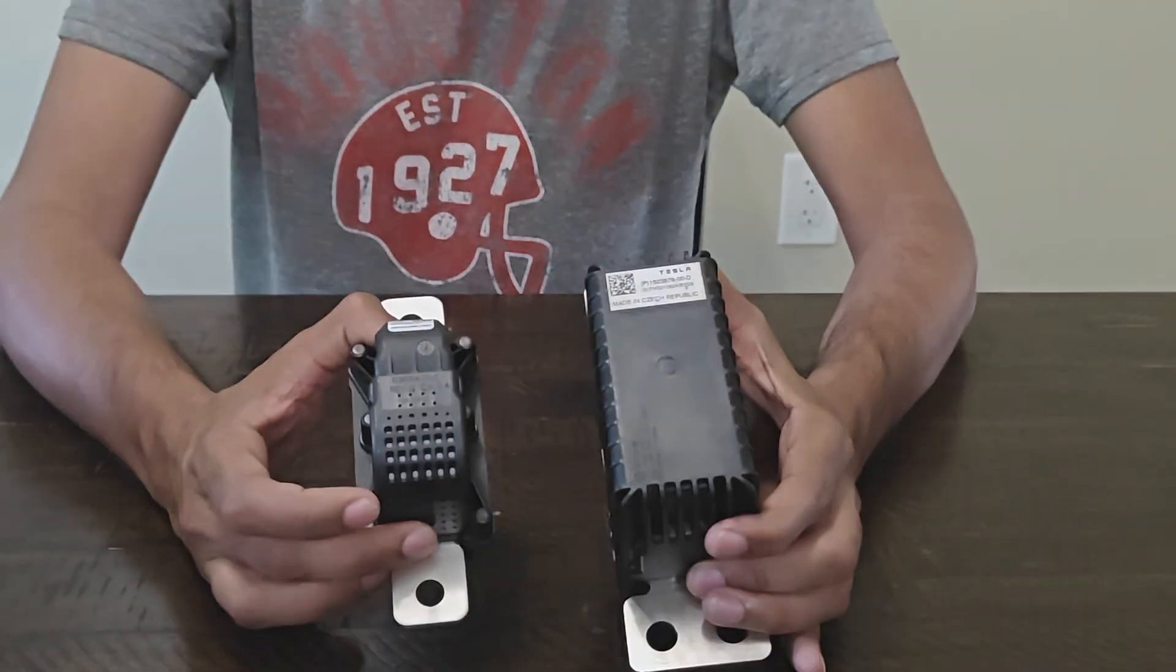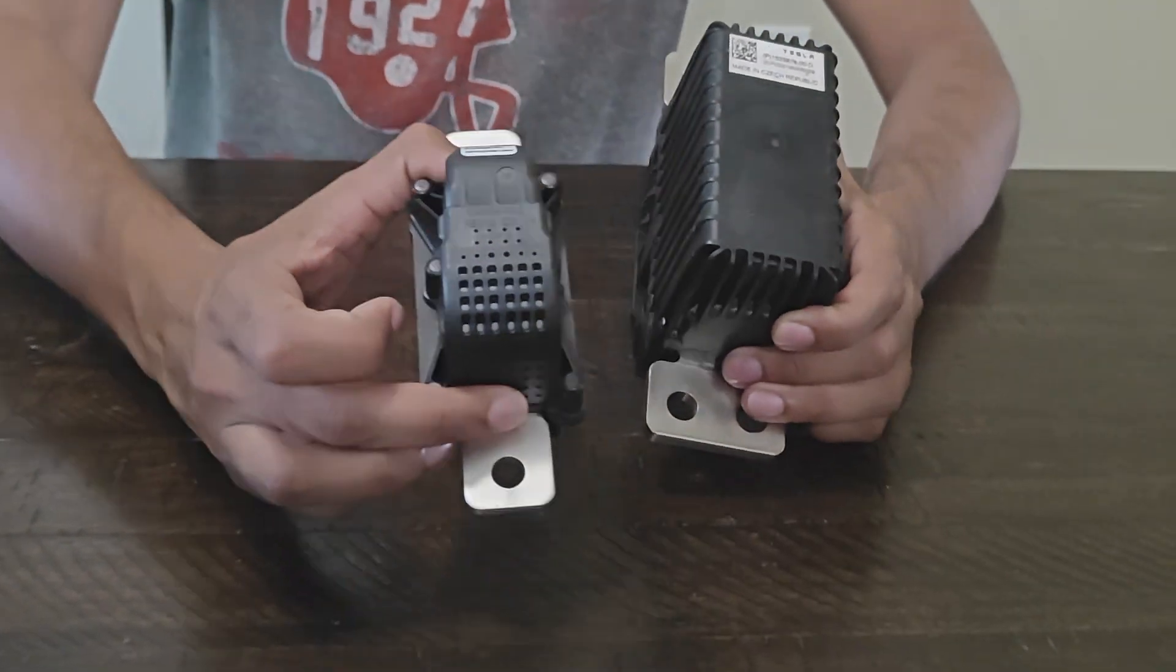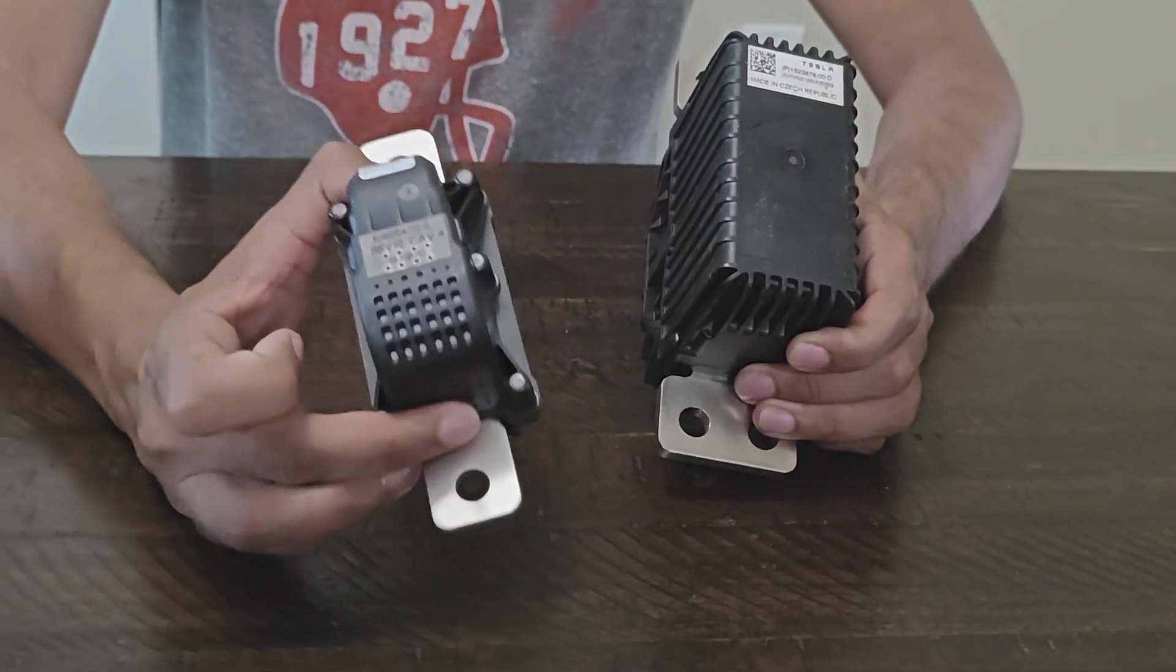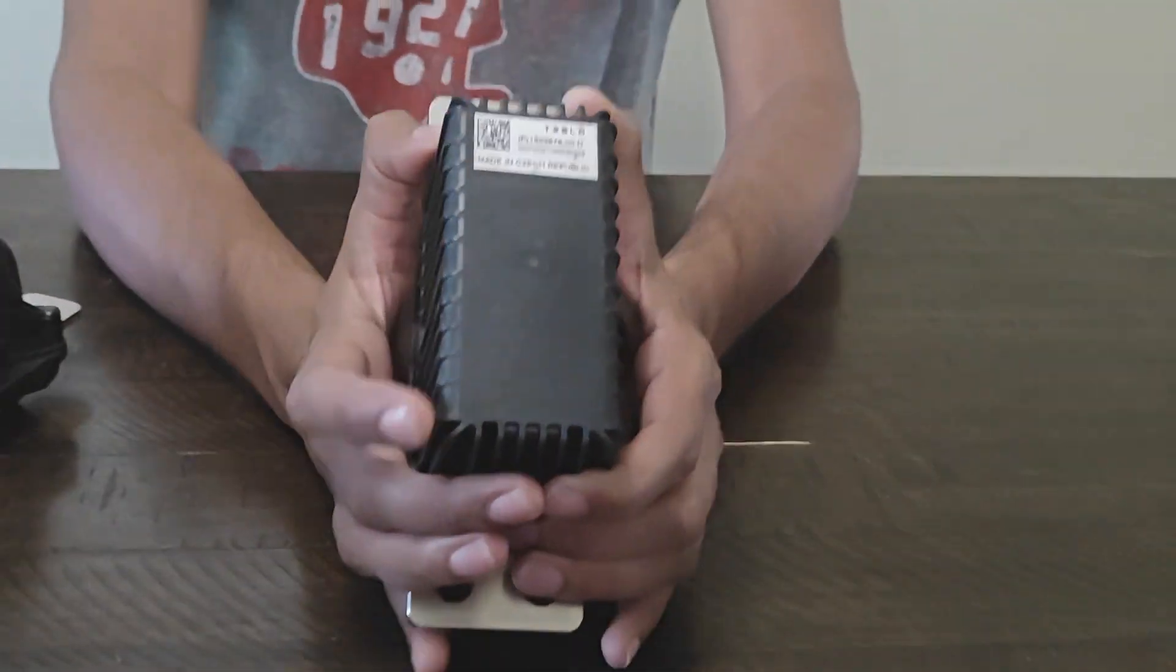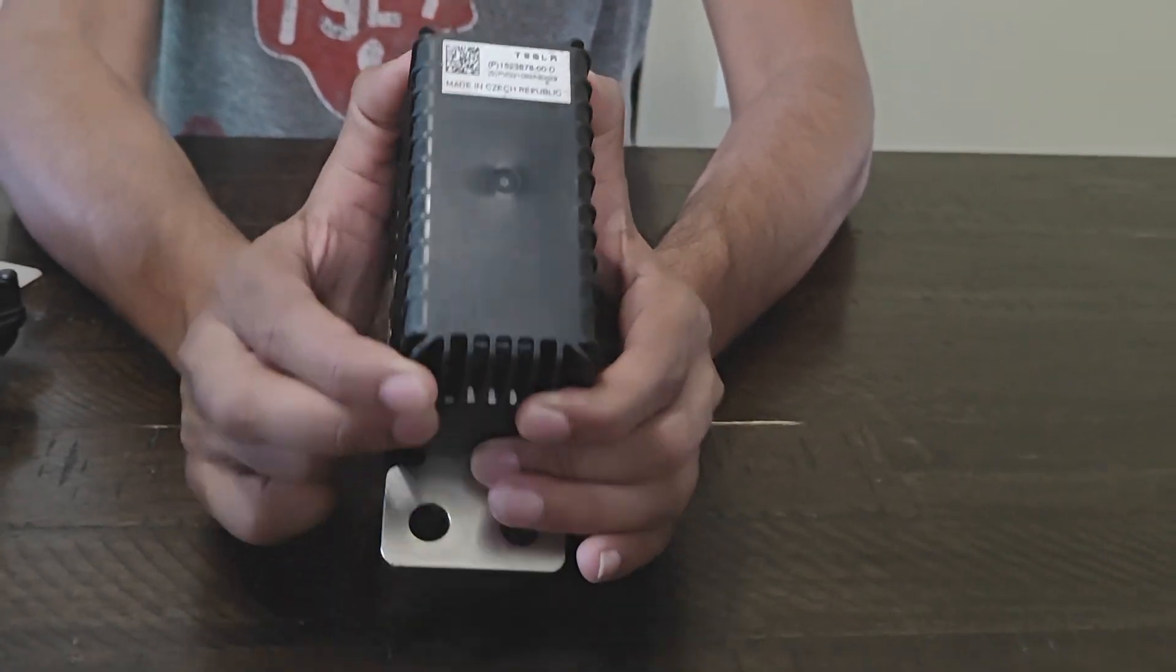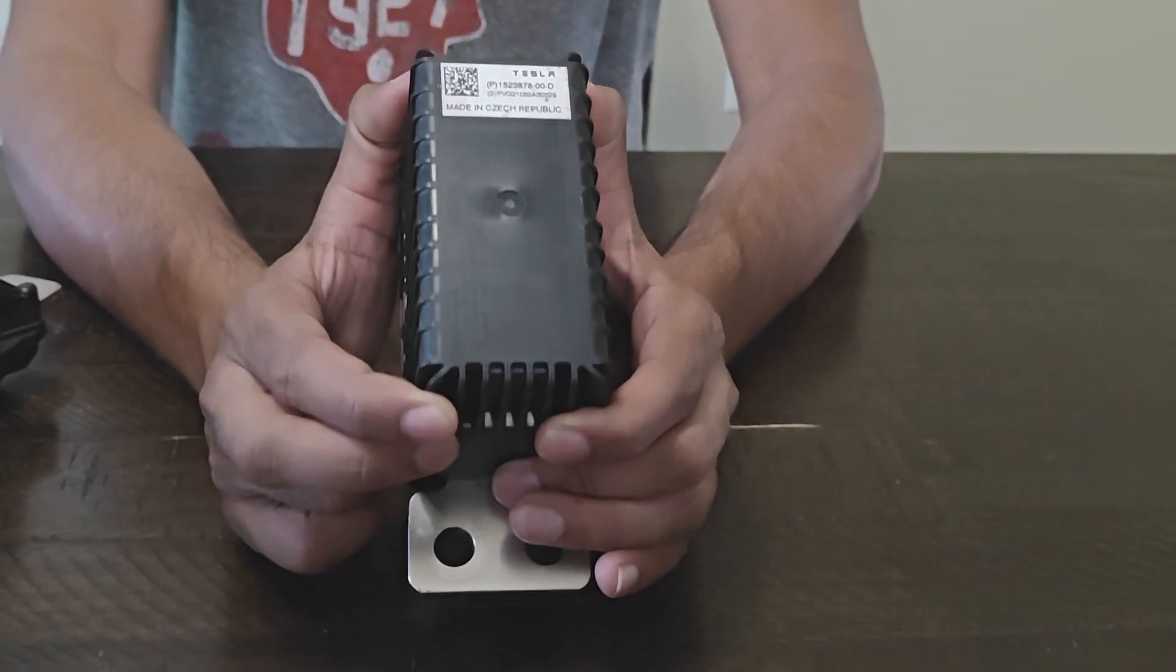Here we have two pyrofuses. This is found on the Model 3 and Model Y, and this is found on the Model S and X.